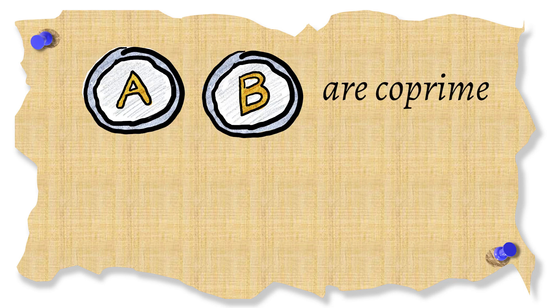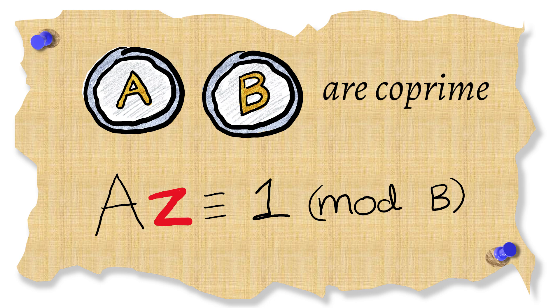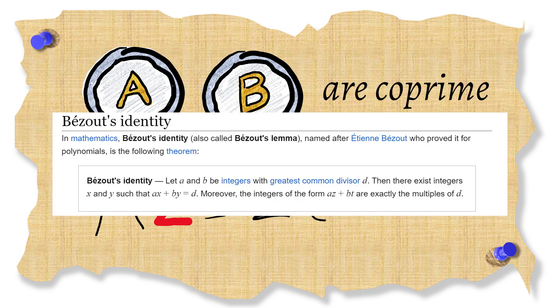In general if A and B are co-prime then A has an inverse modulo B. Take my word for it or if you want a proof you can look up Bezu's lemma.